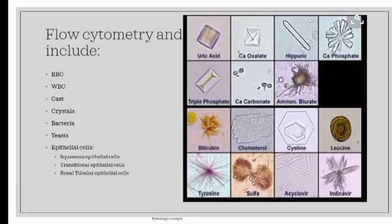Triple phosphate: they are colorless and appear as prisms or coffin lid-shaped crystals with three or six sides. They are found in alkaline urine and associated with certain types of bacterial infection like Proteus mirabilis.